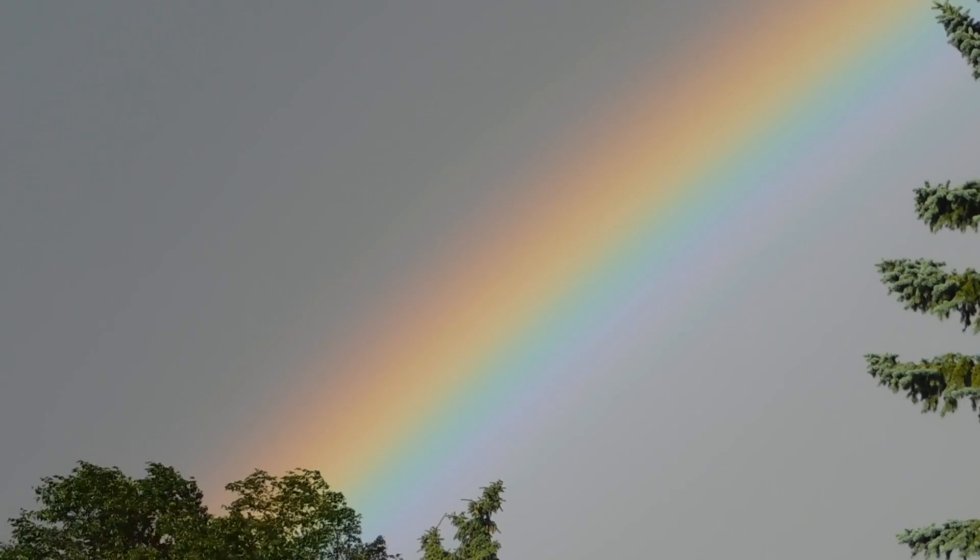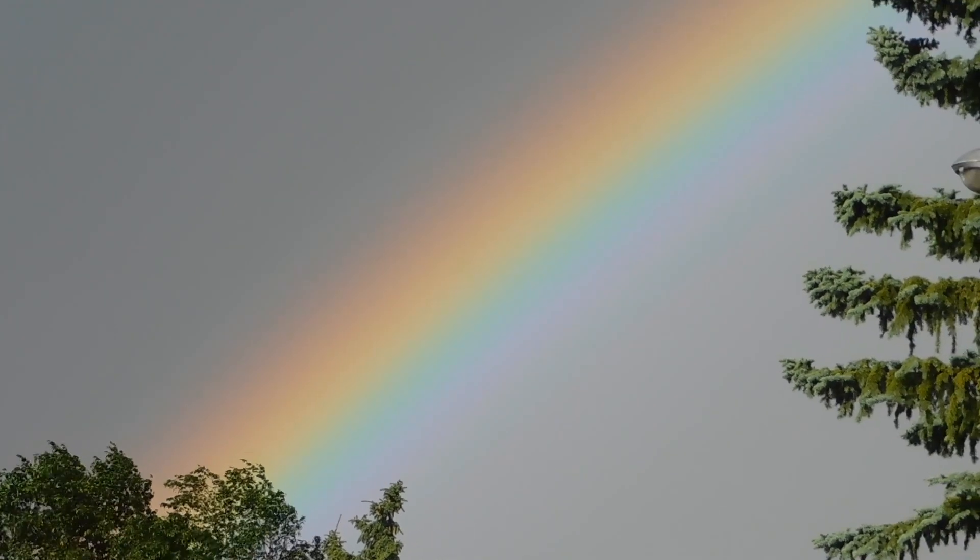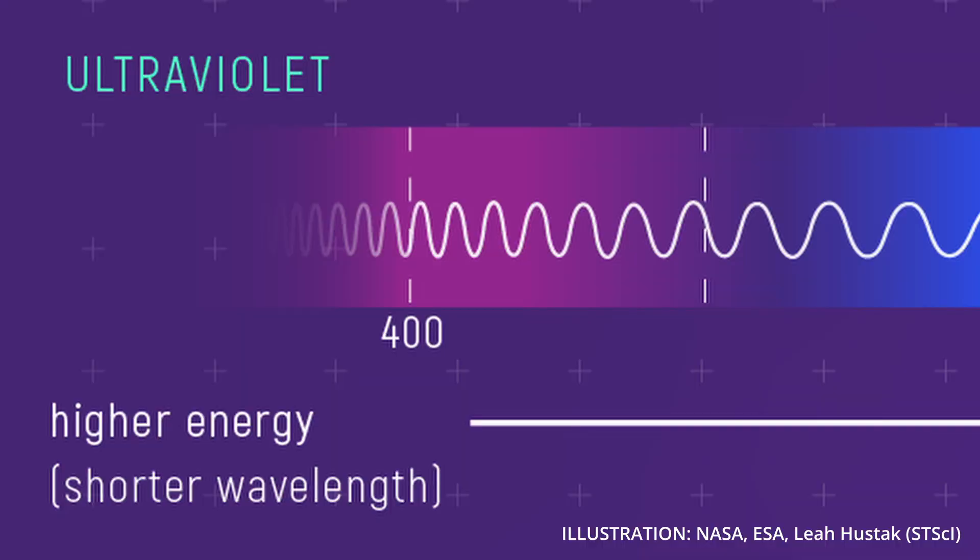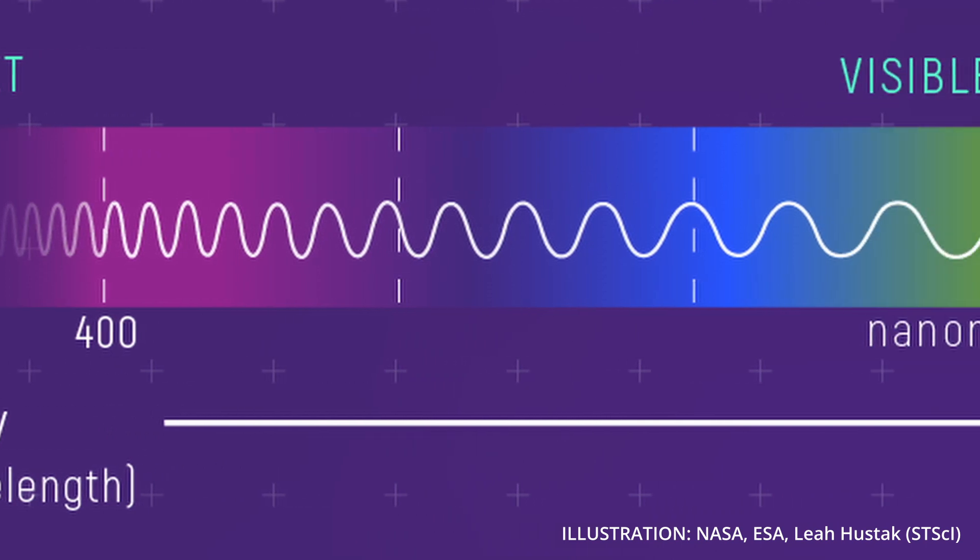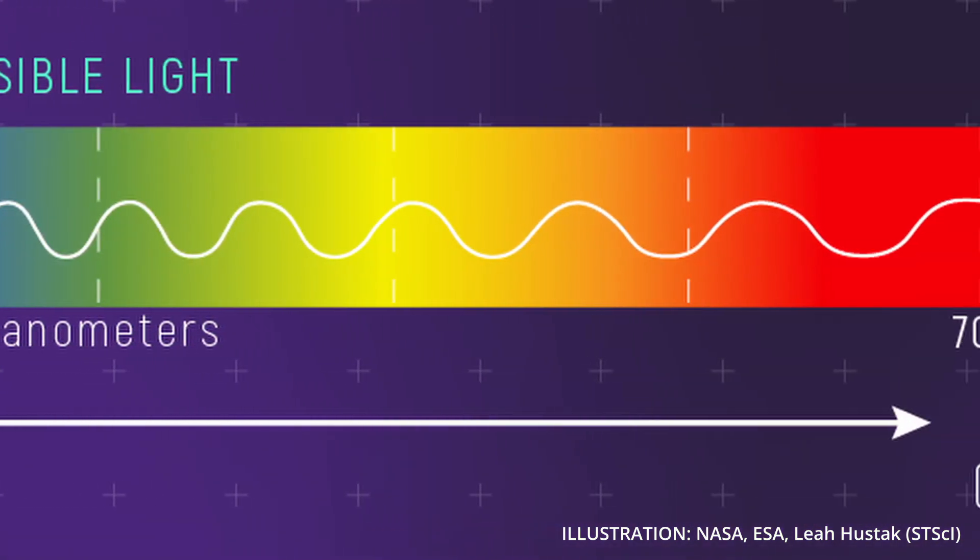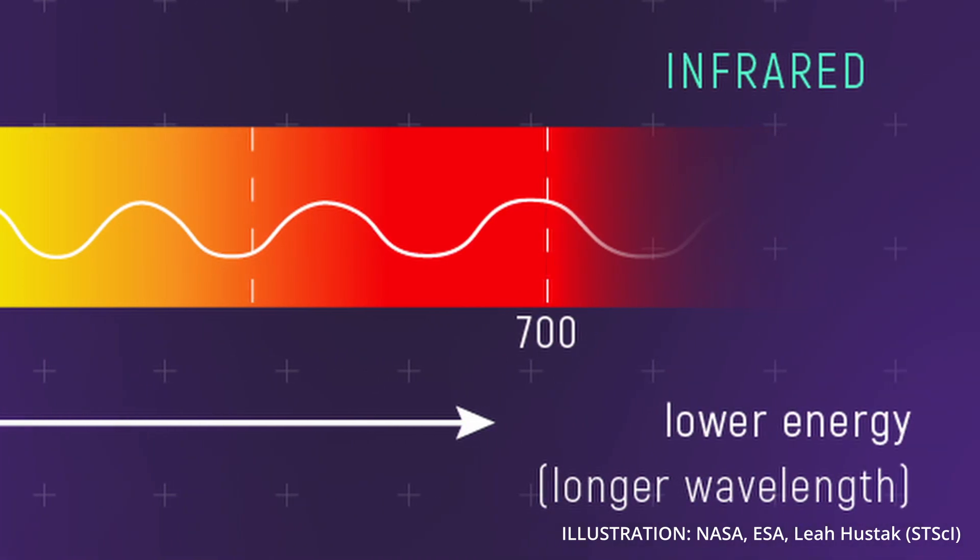What we can see with our eyes is only a very small part of the electromagnetic spectrum—what we call visible light, imaginative right? Typically humans see between 400 nanometers, which is where the violets and blues are, up to around 700 nanometers, which is the oranges and reds.